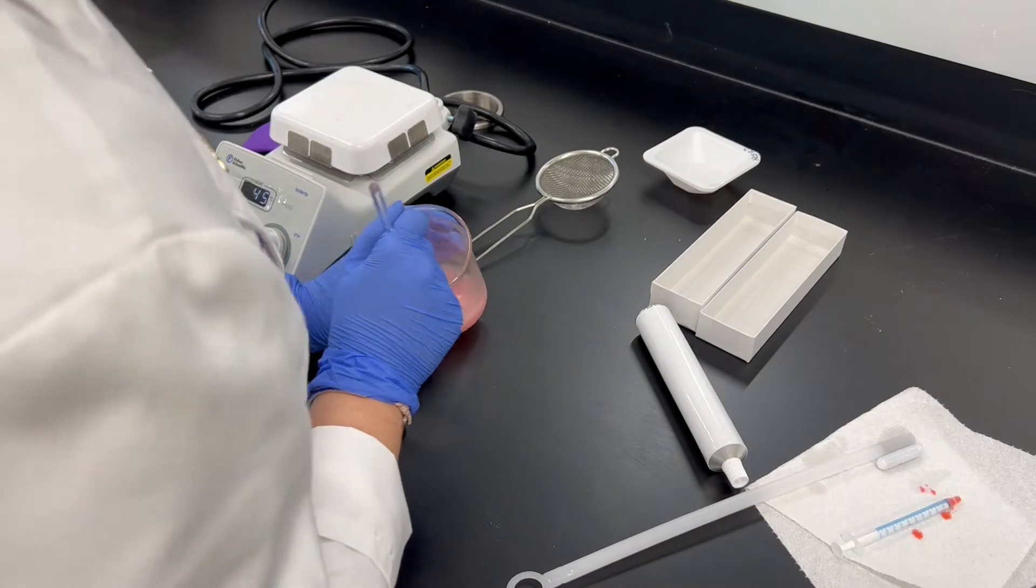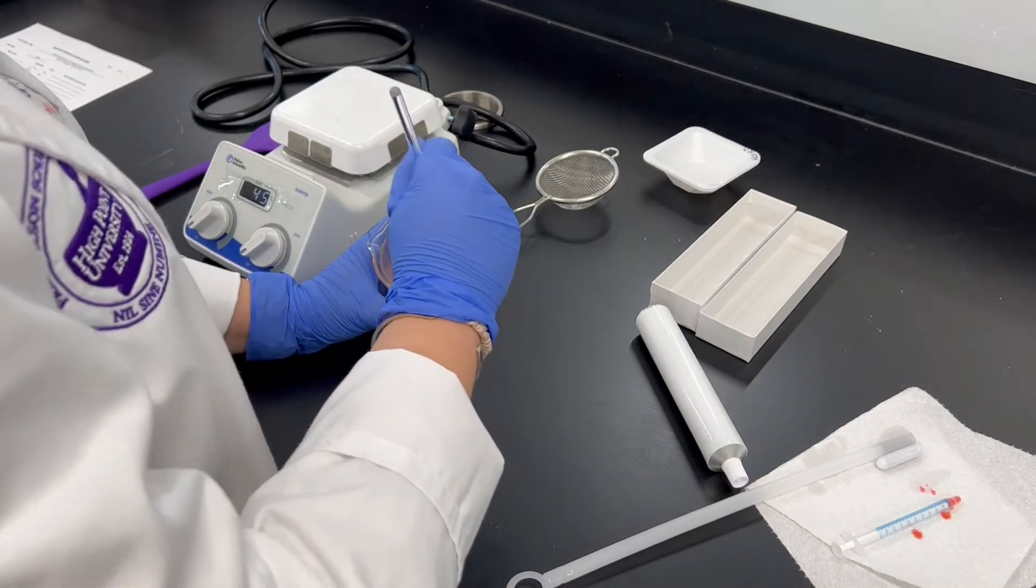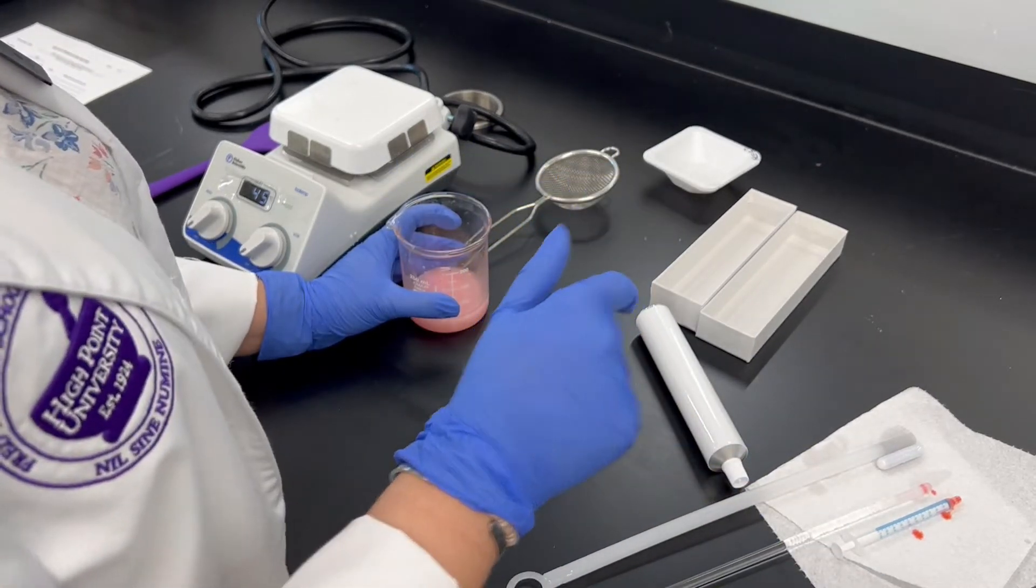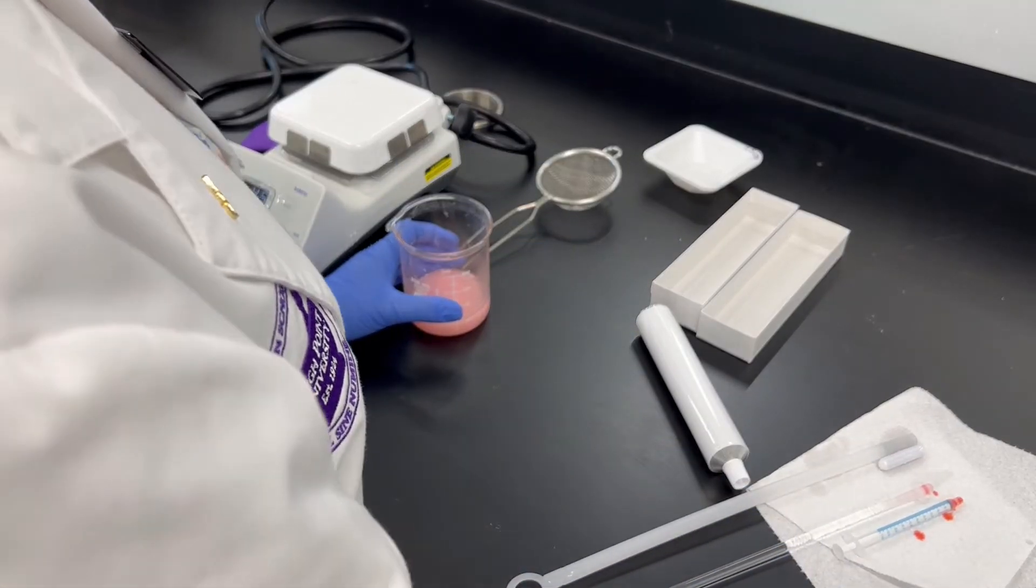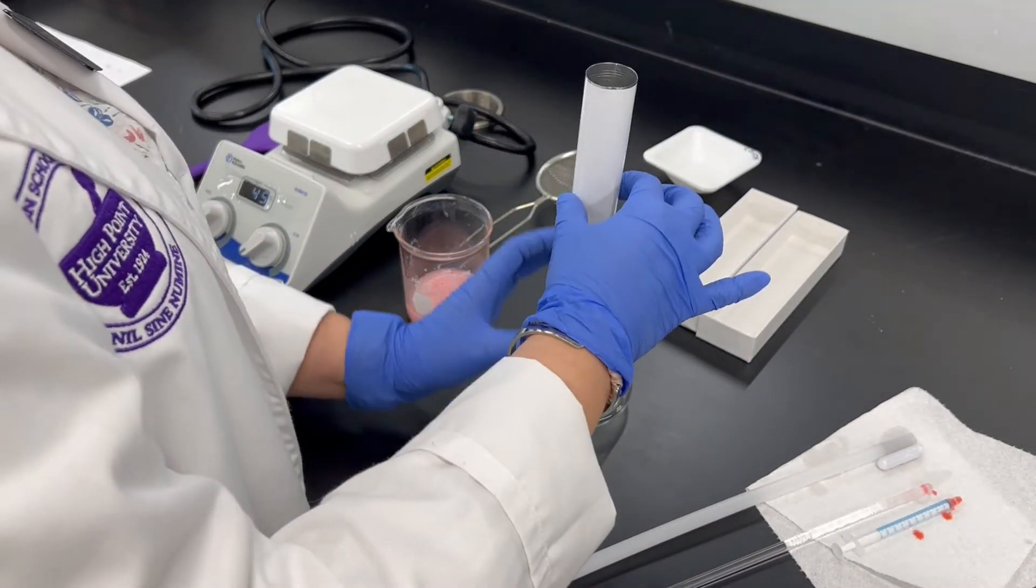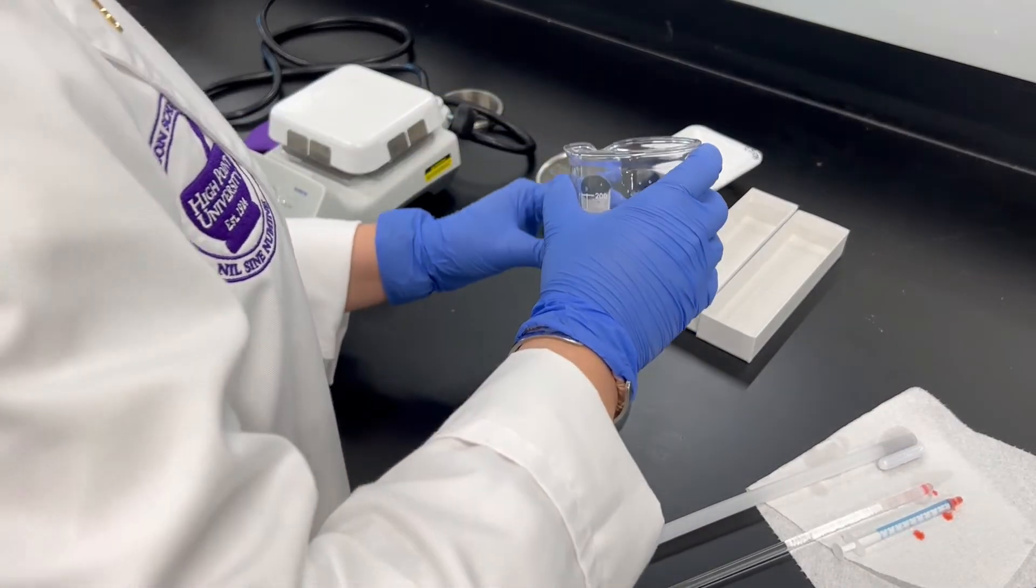Once you feel like it's not getting any thicker as you're stirring, then you can go ahead and put it into your tube. So the easiest way to probably do this is to take one of these flasks, and you can actually just put the tube down in there like that. Then you can just pour this down in here.